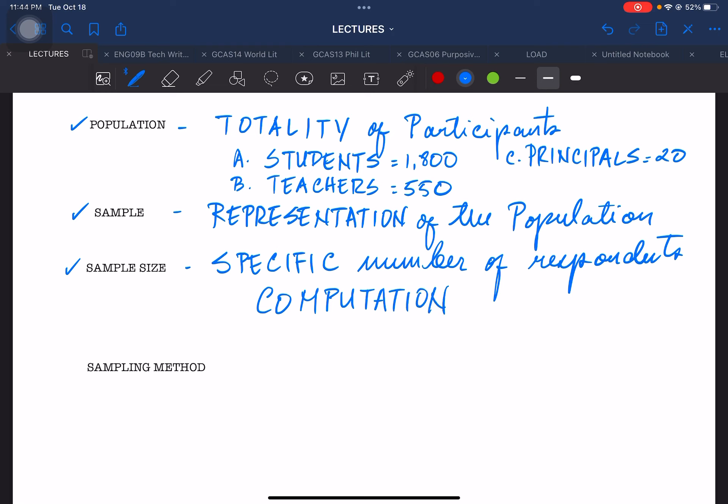Again, napakarami pong paraan para makuha ninyo yung specific number ng respondents, kagaya dyan sa definition na binigay natin. Meron dyan yung gagamit kayo ng Slovens formula. Maliban pa sa Slovens formula, marami pa po kayong pwedeng gamitin. And then yung gagamitin po natin ngayon na mas madali at pinakamabilis na paraan para makuha nyo yung sample size, lalong-lalo na kung napakalaki nung number ng population ninyo.